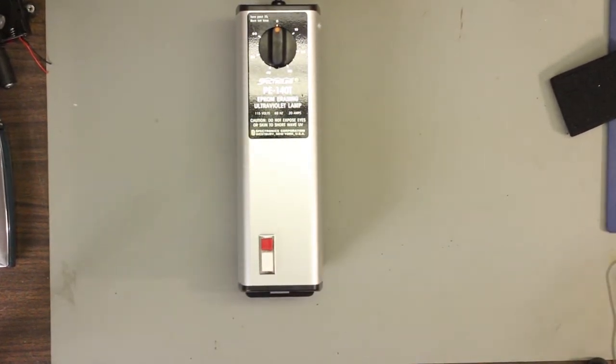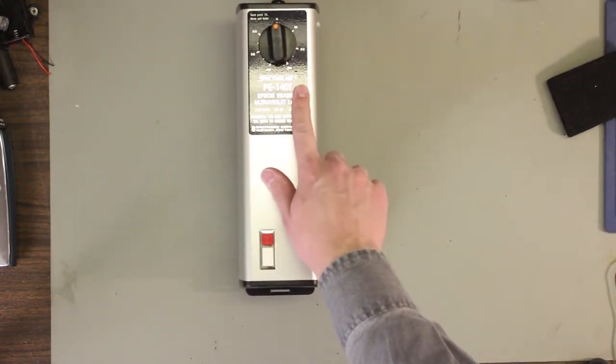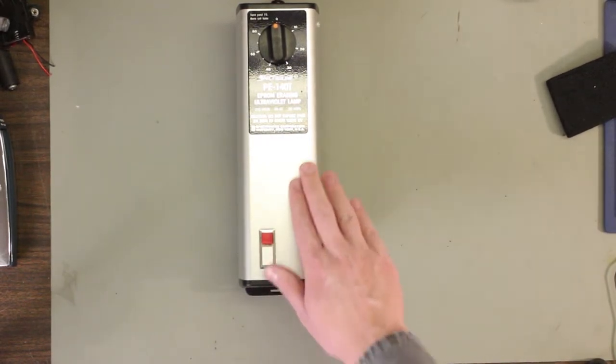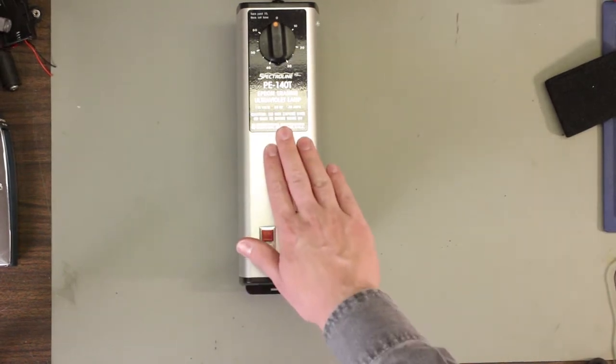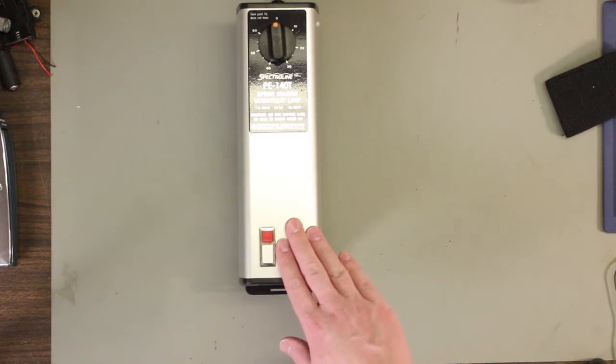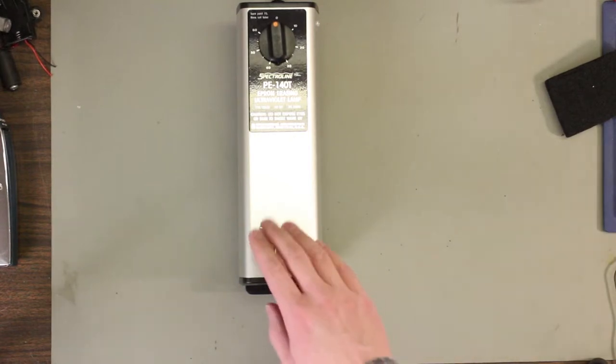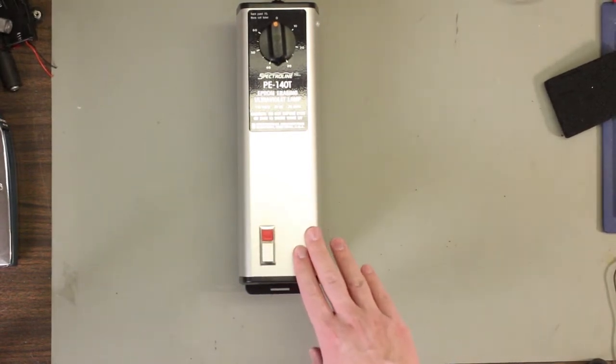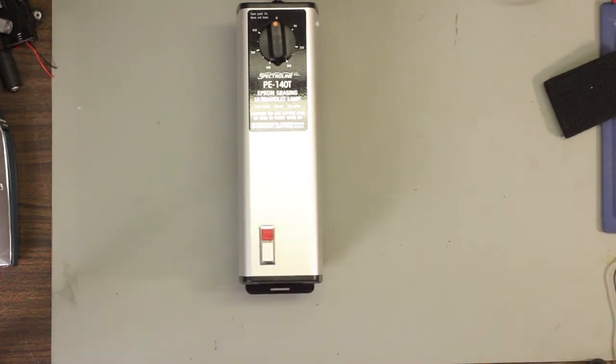So how do you know how much time to erase the chips for? Ideally, you would look at manufacturer's data sheets and the instruction manual for your EEPROM eraser and see what its suggestion is for the chips that you're using. But most likely in this day and age, you'll be using used EEPROMs and probably even a used EEPROM eraser. So good documentation is just very hard to get a hold of.